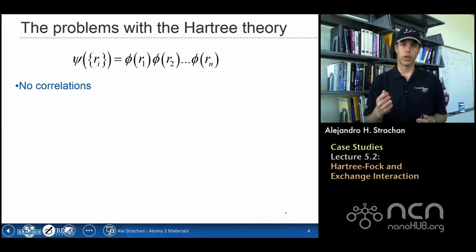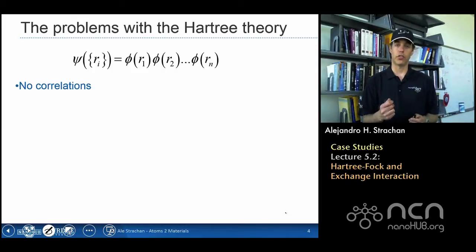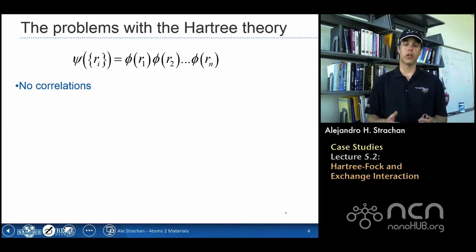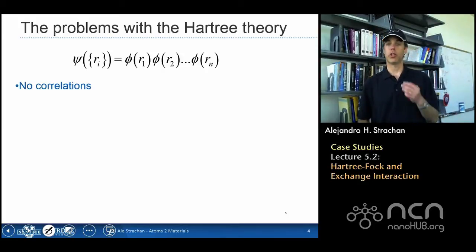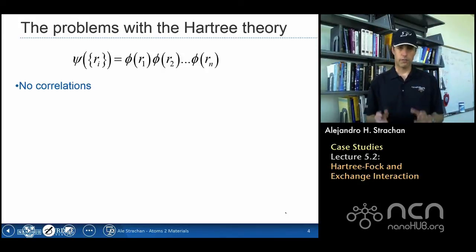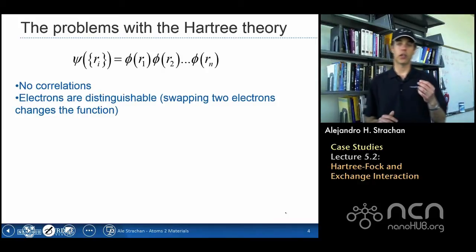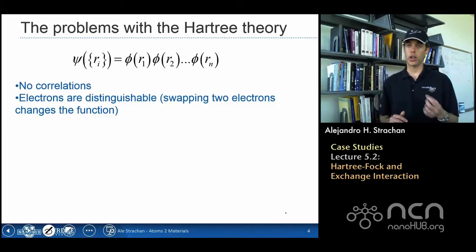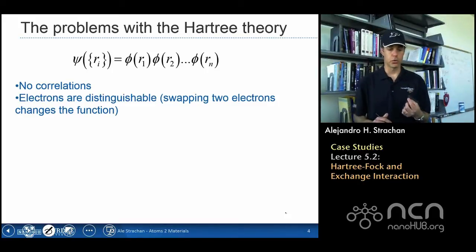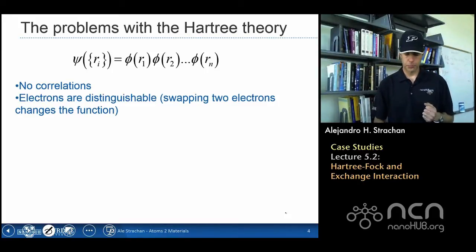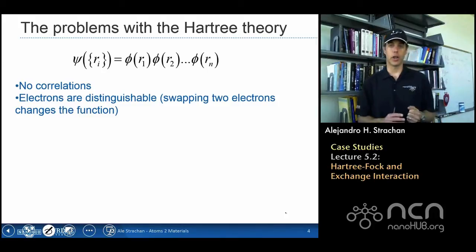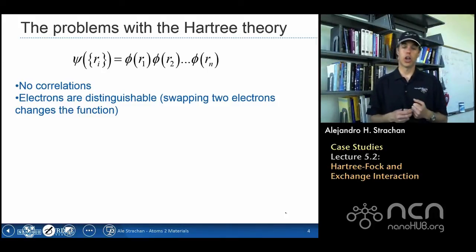Hartree has some disadvantages. One of them is the lack of correlation, and we understand that. But there is a much more fundamental limitation of the Hartree theory, which is that it assumes that the electrons are distinguishable — which they are not. So let's talk a little bit about the nature of a multi-electron wave function.